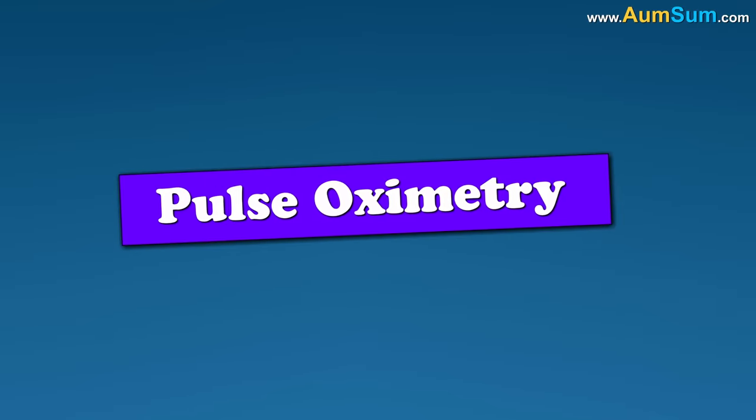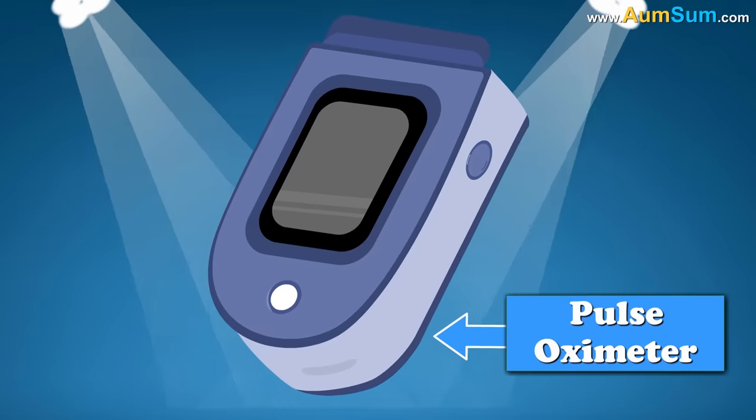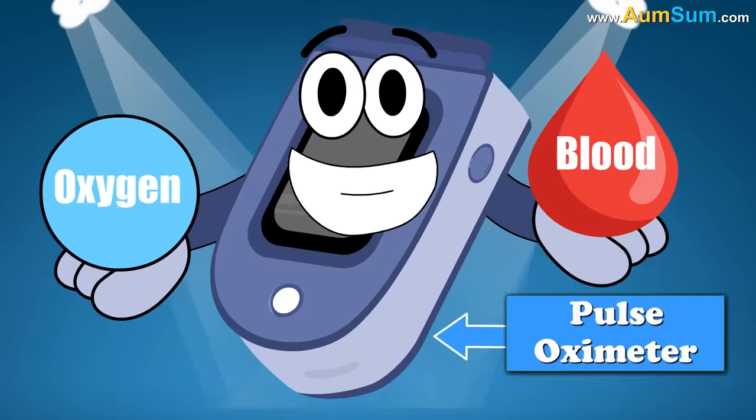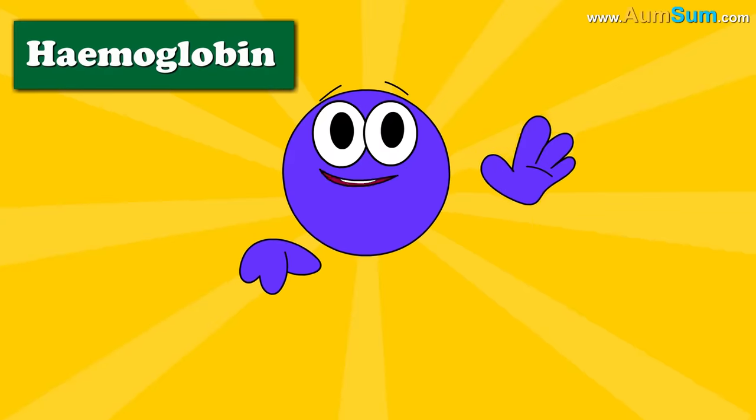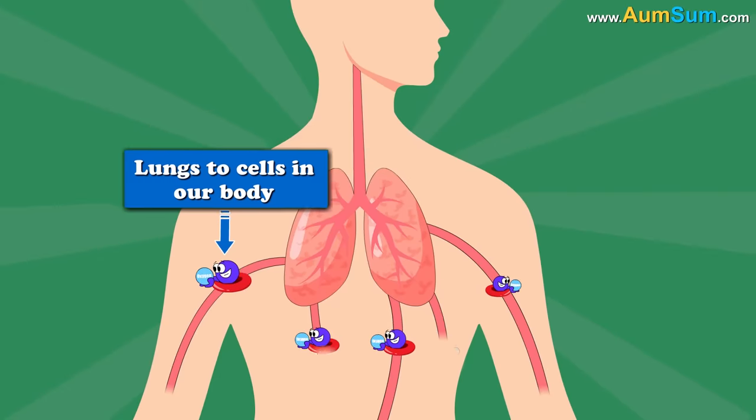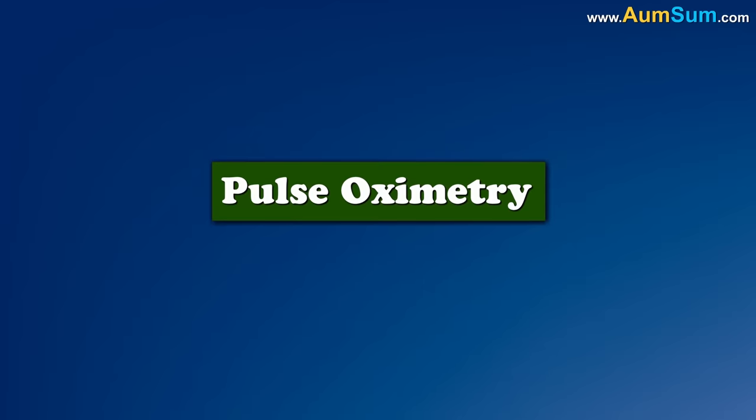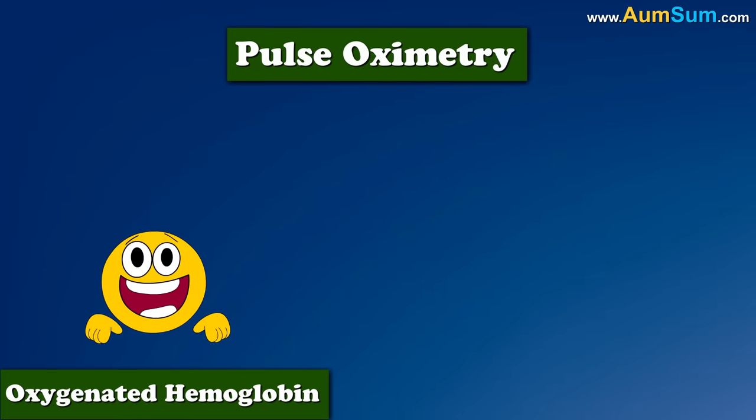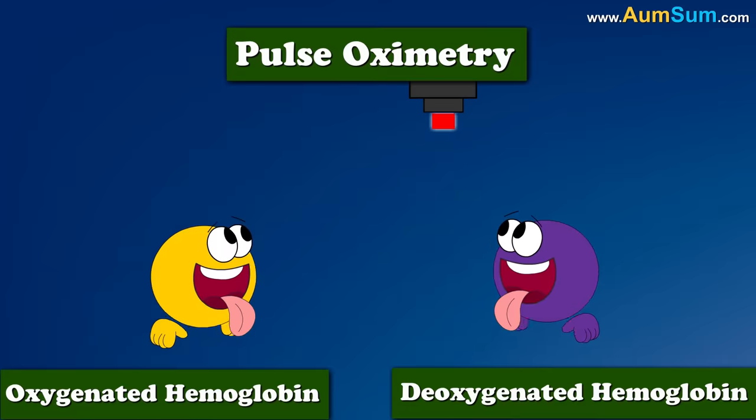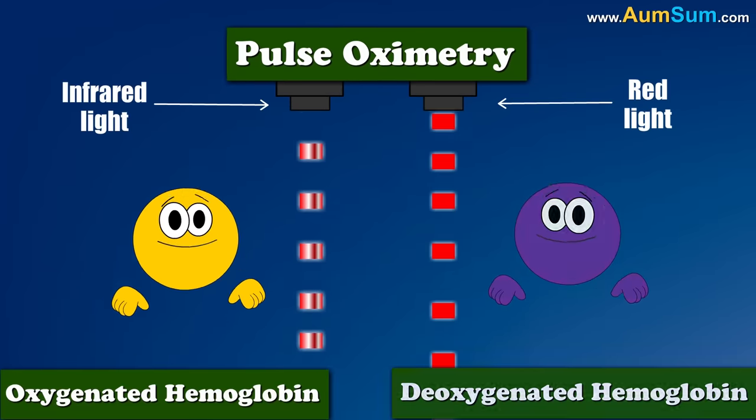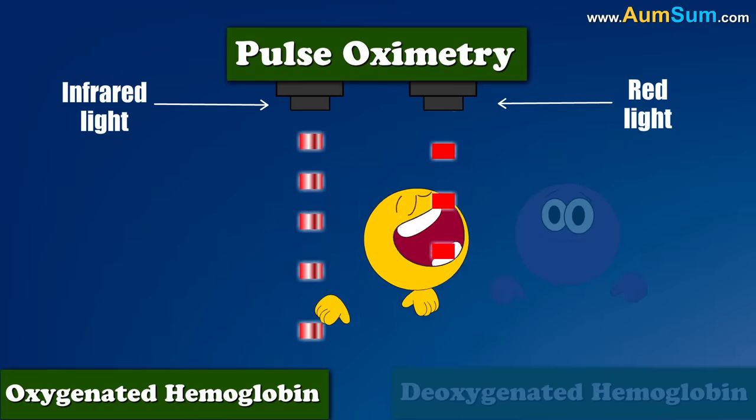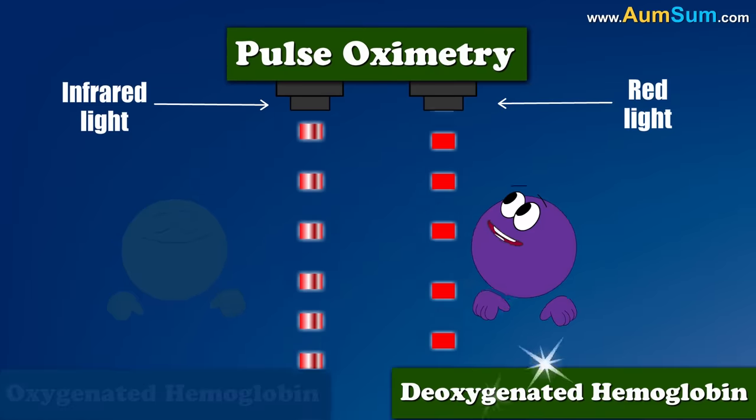Pulse oximetry is a test carried out using a pulse oximeter. This test is used to measure the oxygen level in our blood. Hemoglobin is a protein present in our red blood cells. It transports oxygen from lungs to cells in our body. Pulse oximetry is based on the principle that oxygenated hemoglobin and deoxygenated hemoglobin differentially absorb red and infrared light. Oxygenated hemoglobin absorbs greater amounts of infrared light and lower amounts of red light as compared to deoxygenated hemoglobin.